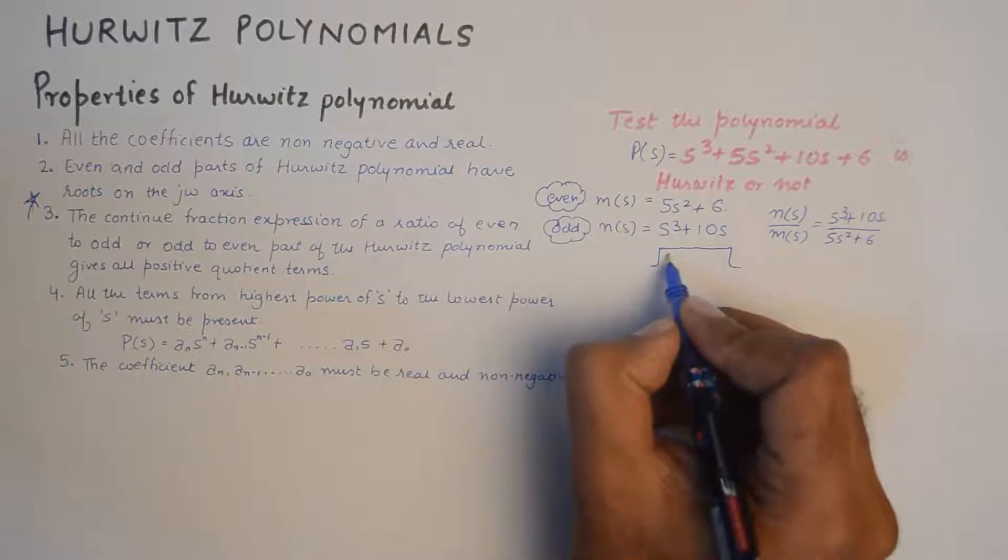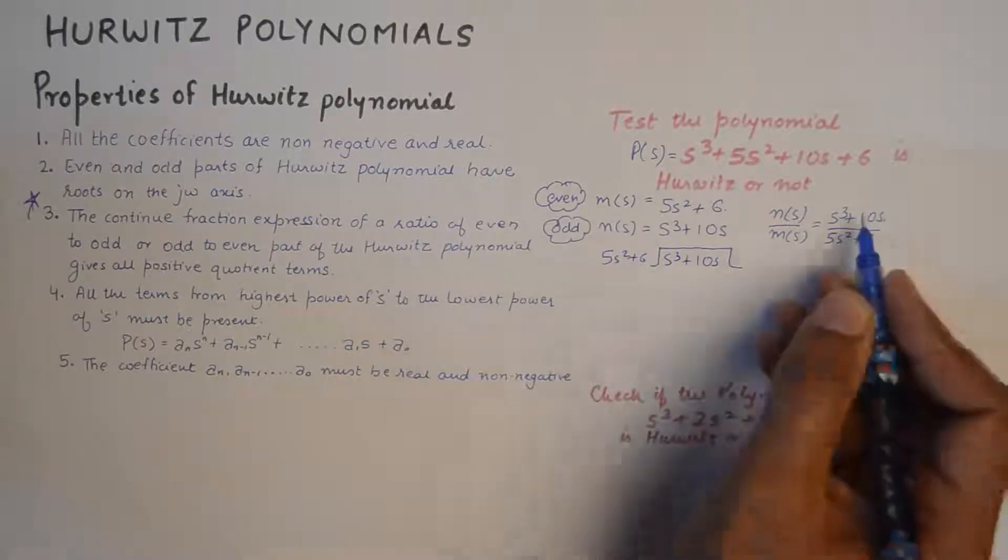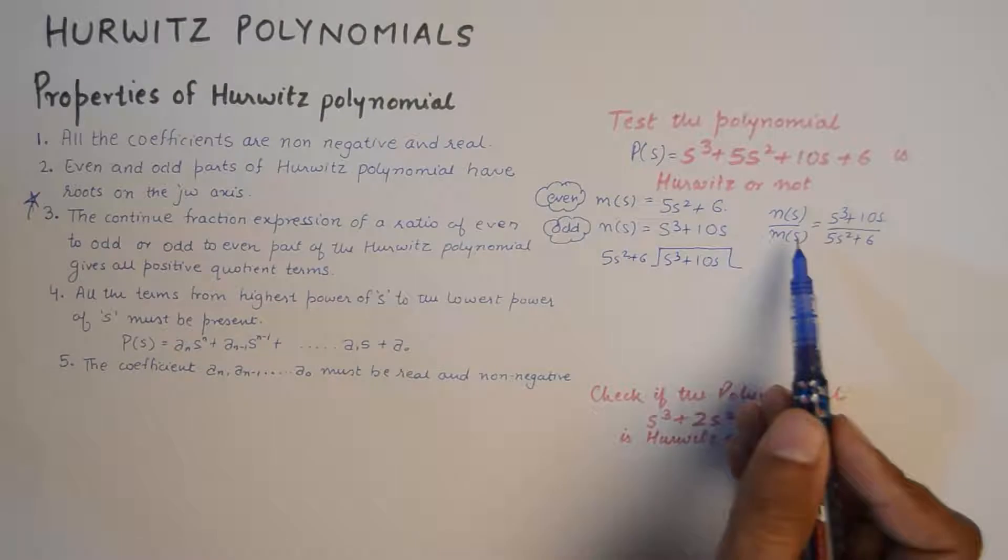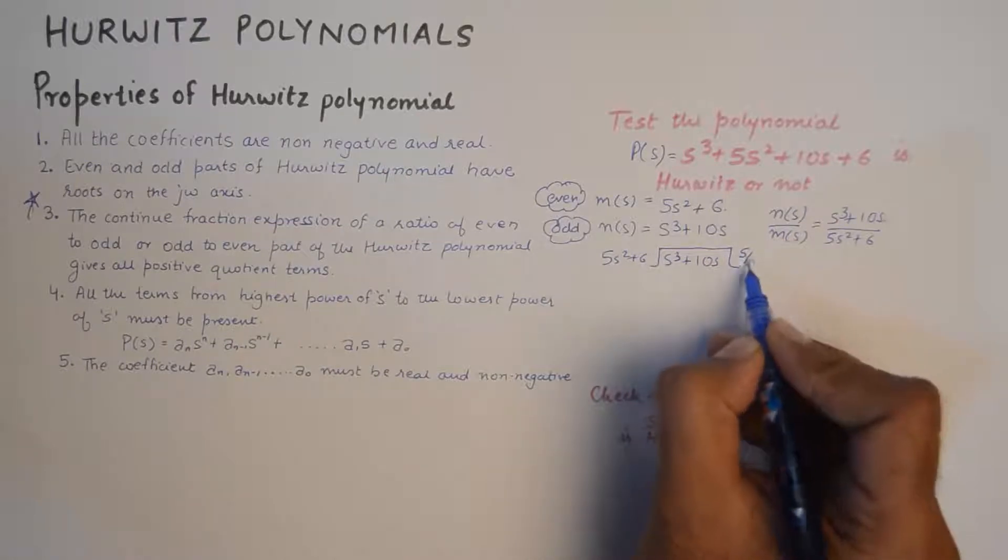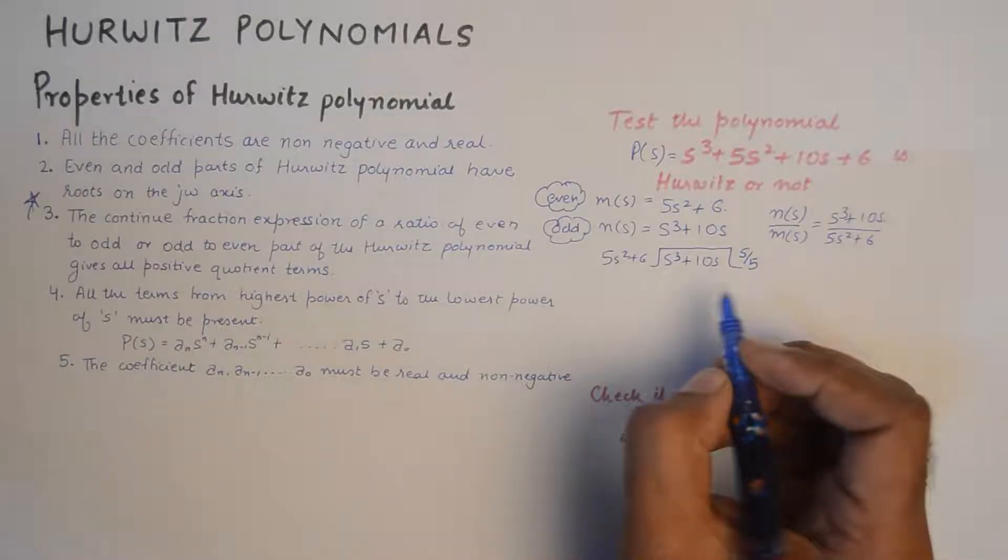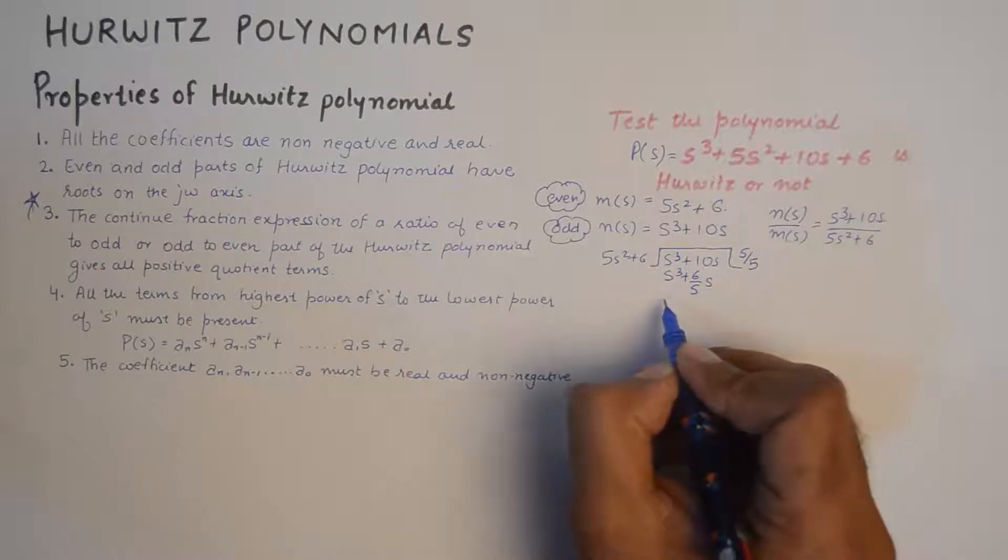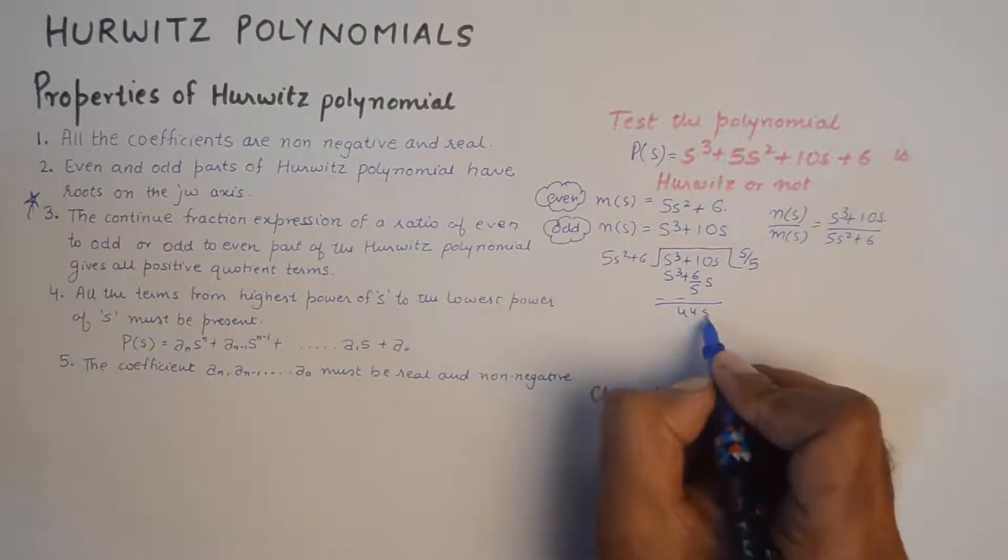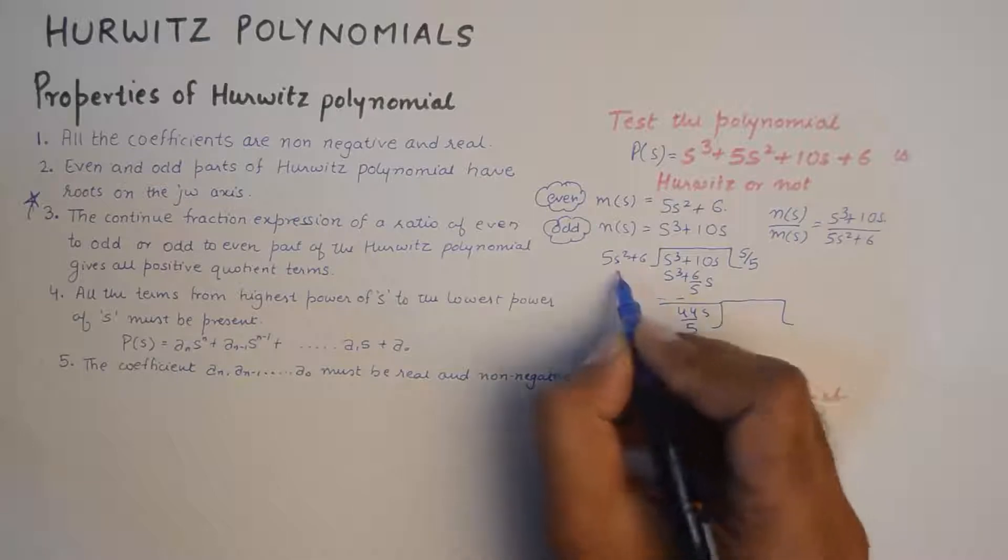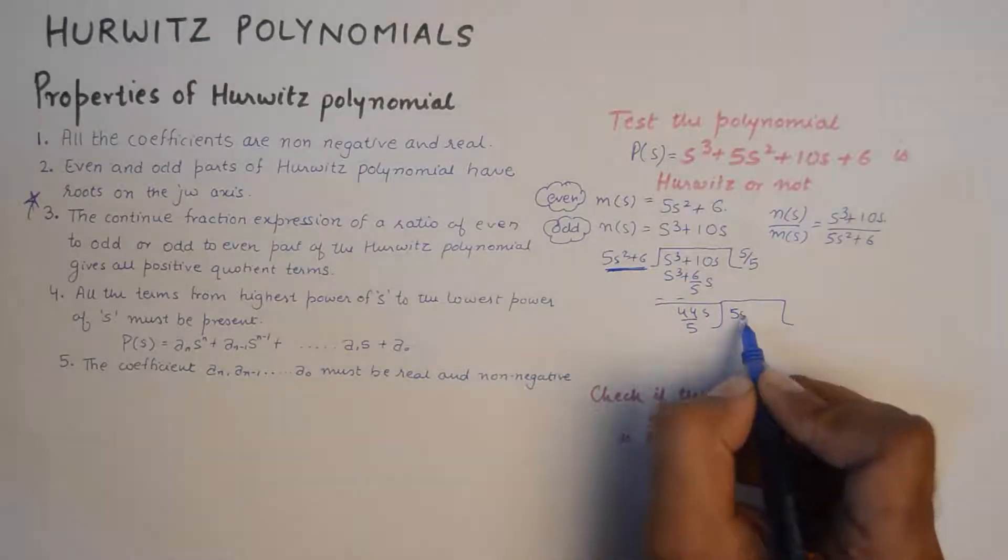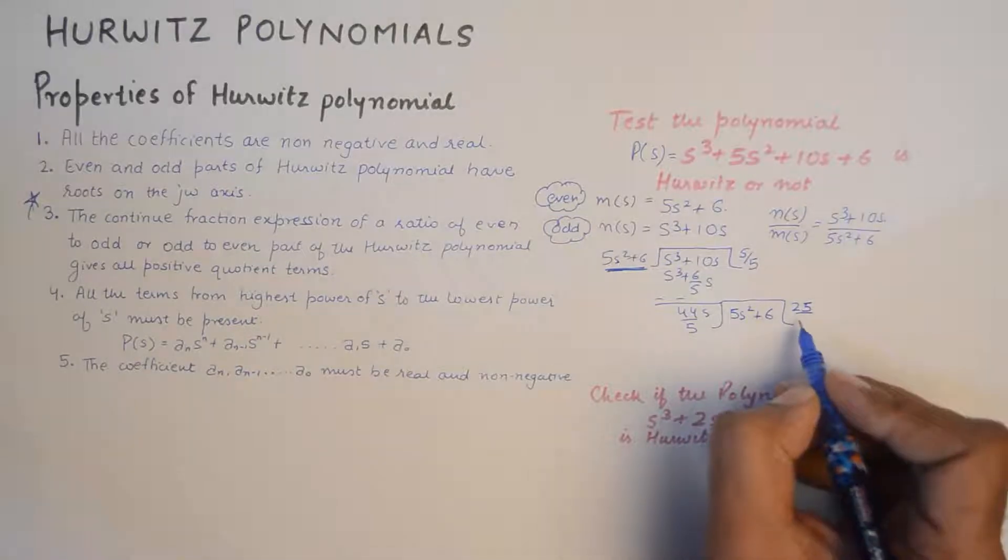So the continued expression format can be obtained by dividing s cubed plus 10s by 5s squared plus 6. Or in other words, we'll divide the numerator with the denominator. So firstly we multiply it with s by 5 to get s cubed plus 6 by 5s. So what you need to do is you need to bring this thing here.